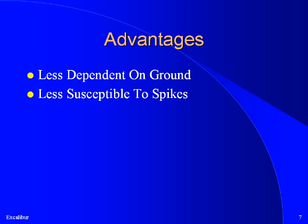In addition, if an unexpected electrical field should come up — due, for example, to an electrical storm or a kid turning on his video game — it could affect the value of a signal relative to ground. However, since the differential signals are shielded, any effect on one will likely also affect the other. If both signals are increased by 3 volts, the difference between the signals remains the same.